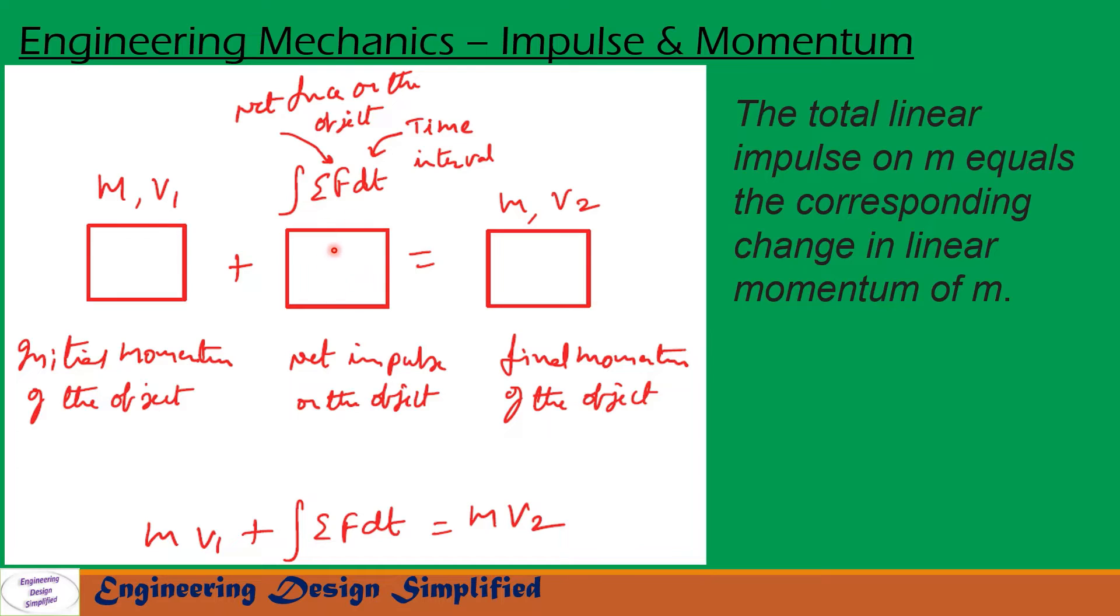So when the force is applied on this moving body, its final velocity will change to v₂. So its final momentum can be written as m·v₂.